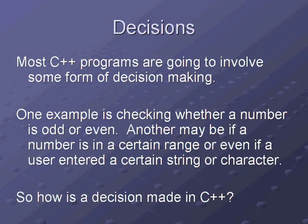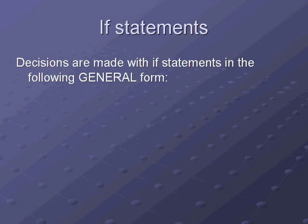So how is a decision made? Well, decisions are made with if statements in the following general form. So it starts with if something, the condition or conditions are a logical or what would be a logical set of conditions. It could be just one.